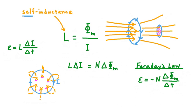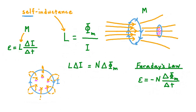Rather than symbolizing mutual induction with a capital L, it's typically a capital M that is used. So in the EMF equation, instead of an L we might see an M, but it means essentially the same thing: some inductance, whether self-inductance or mutual, multiplied by a change in current over a change in time, equals the induced EMF in a current-carrying loop. The same is true for the flux-based equation. It's worth pointing out that mutual inductance is the operating principle for electrical transformers.